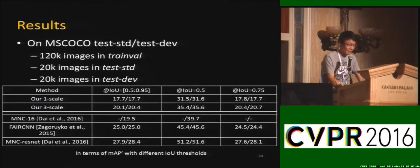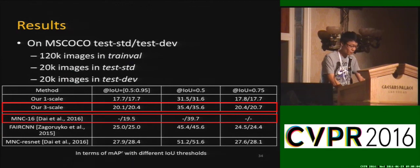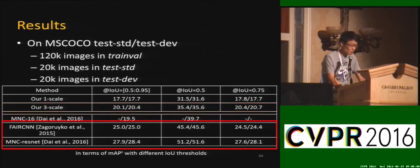We evaluate our method on the Microsoft COCO dataset, training on train and validation subsets and reporting results on test-standard and test-dev subsets. We compare with the contemporary work MNC using VGG16 without network ensemble. Our three-scale augmentation reaches good performance. The bottom two compared methods use model ensembles or new network structures, which largely increases performance.